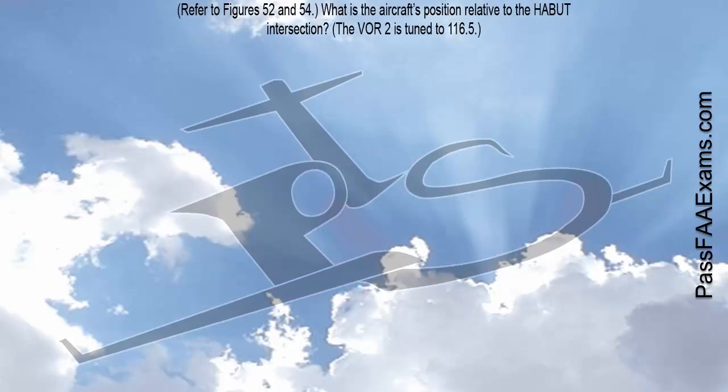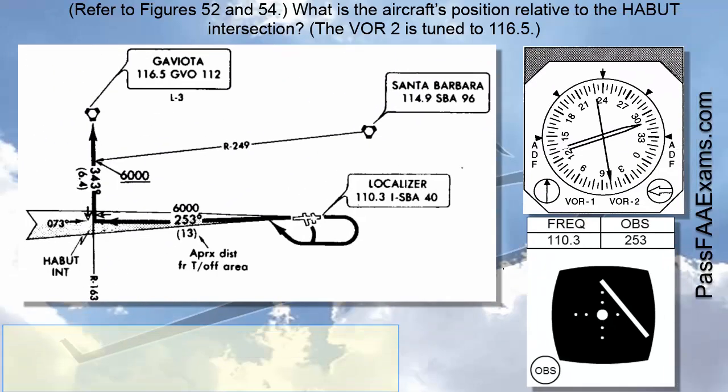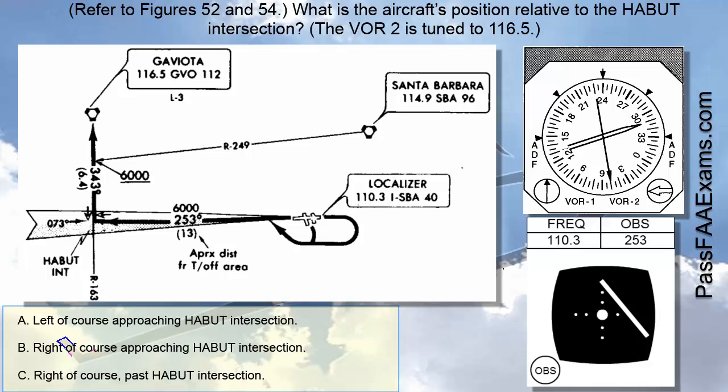The question says, refer to figure 52 and 54. What is the aircraft's position relative to the HABIT intersection? The VOR number 2 is tuned to 116.5. So, let's bring up the figures and the answers and let's see what all the fuss is about.